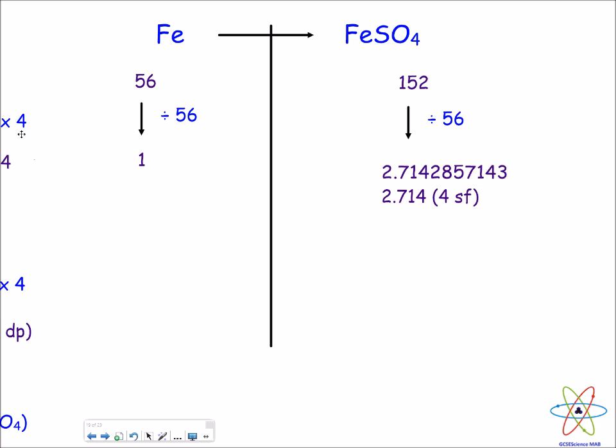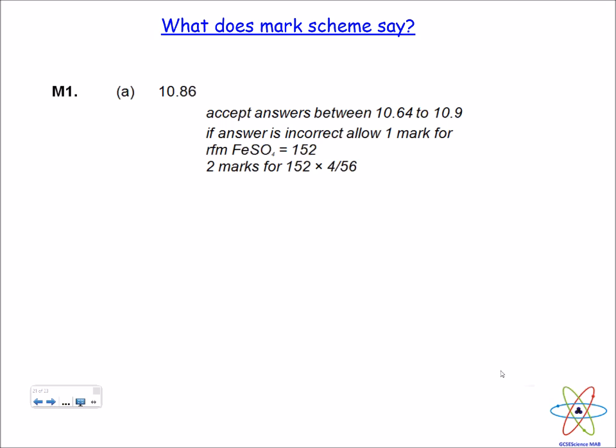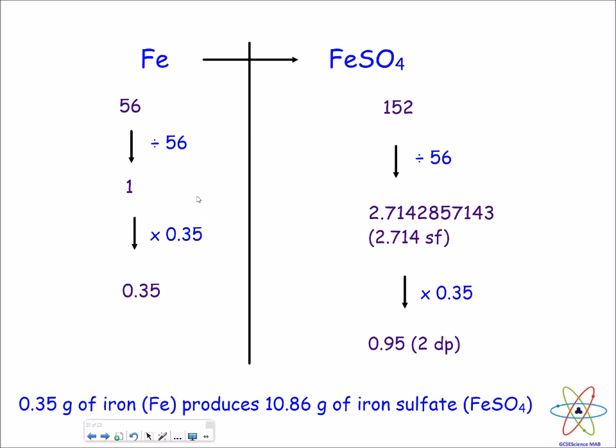I need to keep the ratio the same, so divide 152 by 56, and that gives us 2.714 to 4 significant figures. If it makes it easier, you can use all the numbers in the calculator. The question said 4 grams of iron, so multiply the 1 by 4, that gives us 4, and do the exact same thing to this side—2.714 multiplied by 4 gives us 10.86, rounded to two decimal places. Our final answer is 4 grams of iron produces 10.86 grams of iron sulfate. The mark scheme gives 10.86 grams but will accept any answer between 10.64 to 10.9 grams, because some people may take different significant figures or have rounding errors, so they're not penalized. If the question asked how much iron sulfate could you produce from 0.35 grams, we use the exact same method. Scale down the iron to 1 gram, then multiply by 0.35, and that gives us 0.95 grams.